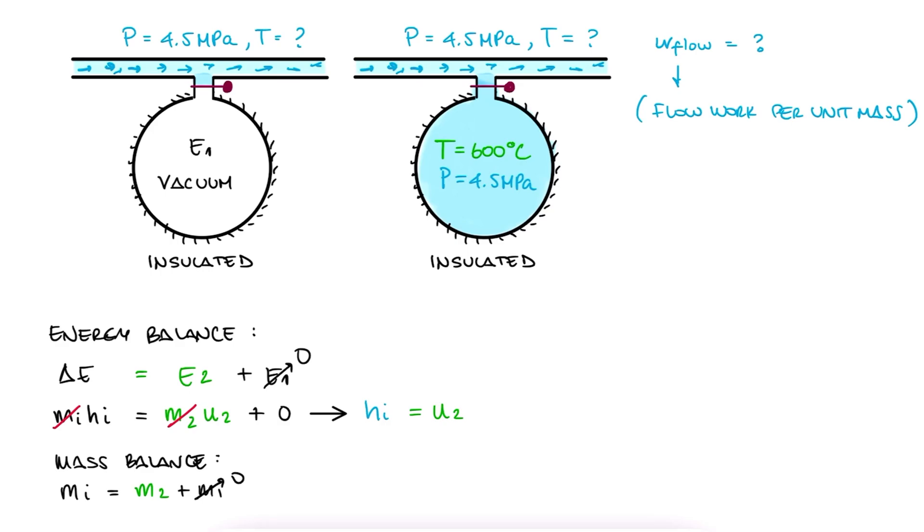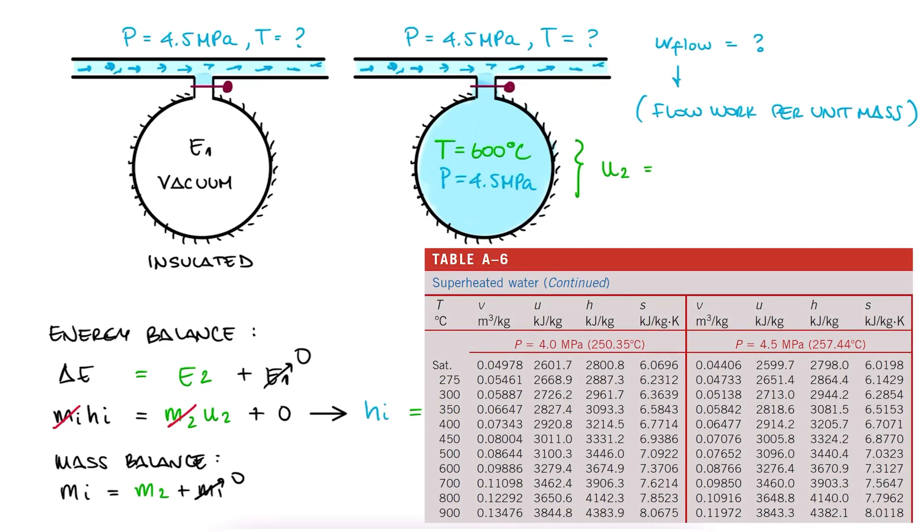Since what we have is the temperature and pressure inside the tank, we use these two values to get the specific internal energy U. We go to the superheated tables for water, since we were told it was steam, and look up 4.5 megapascals and 600 degrees Celsius. We write down the specific internal energy value.